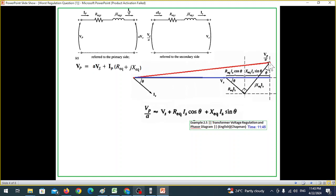This is the input and if we bring it closer to the output, this portion will be added. This portion is R equivalent I_S cos theta plus X equivalent I_S sin theta. That means the primary voltage VP will be approximately equal to VS plus these two terms. So we'll use this equation to find the angle.